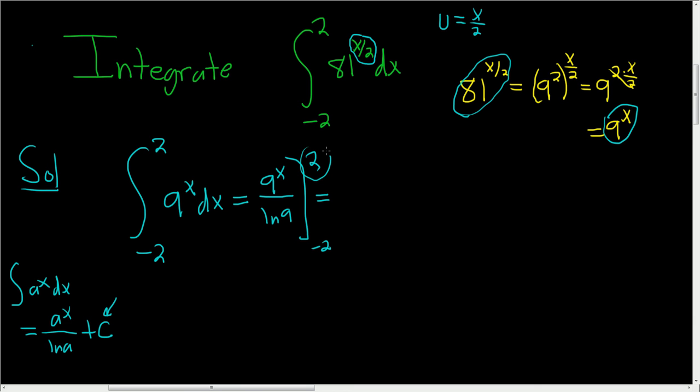And now we first plug in this number. So this is 9 squared over the natural log of 9 minus, and then you plug in this number, 9 to the negative 2 over the natural log of 9.